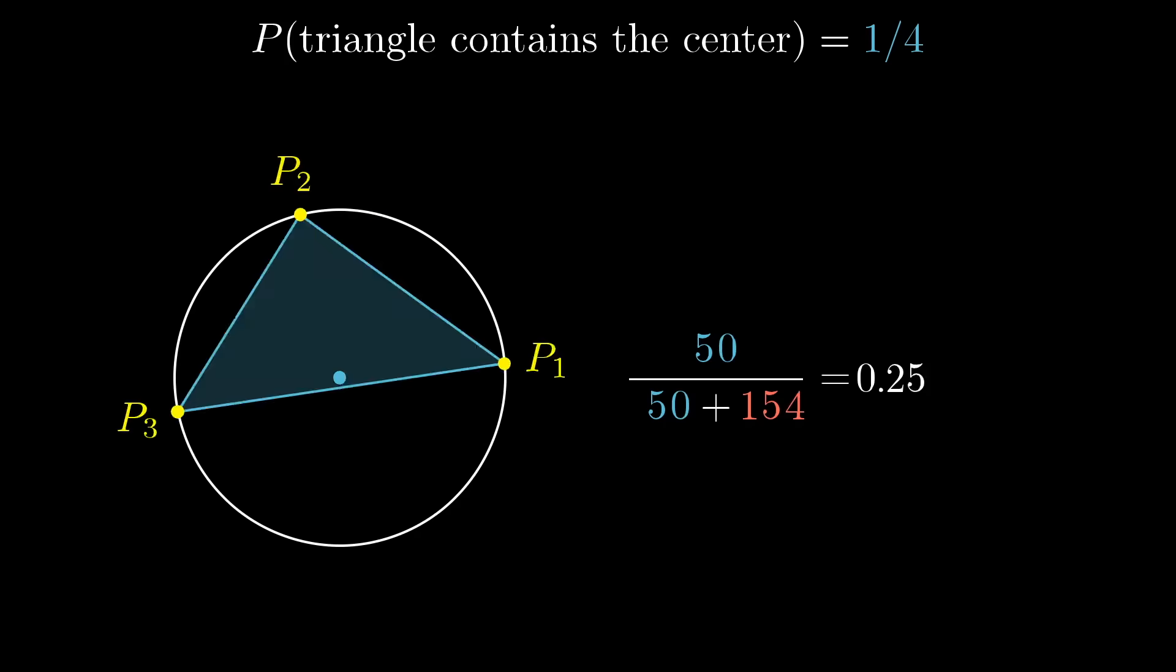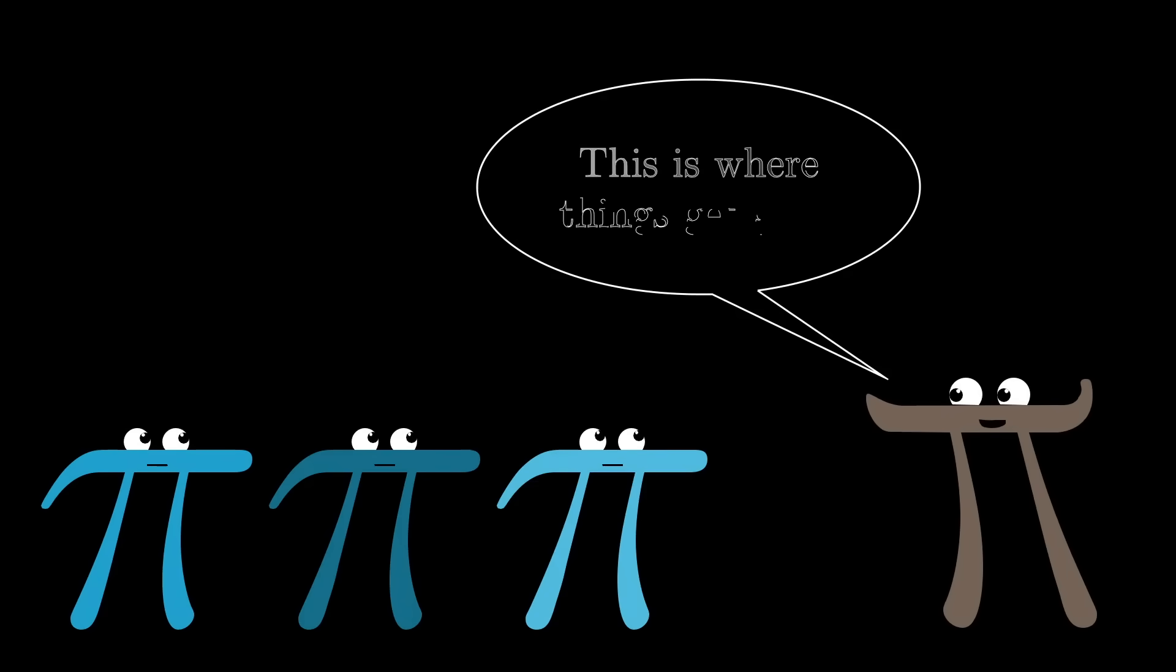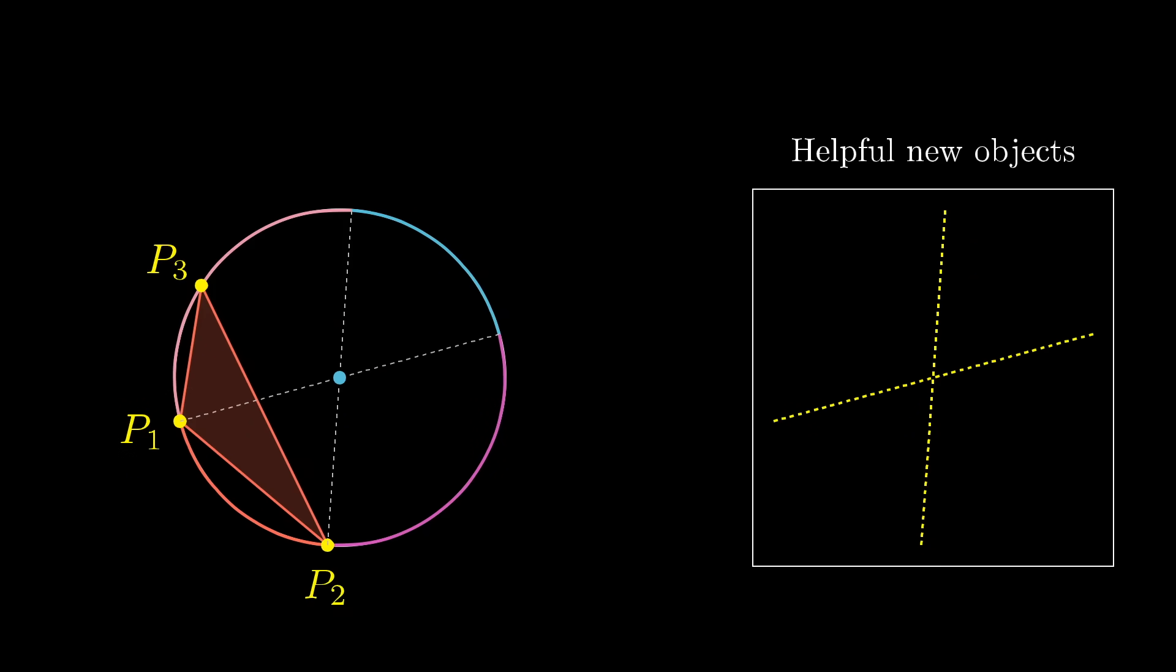One of the main reasons I wanted to make a video about this particular problem is that what's about to happen carries with it a broader lesson for mathematical problem solving. Think about those two lines that we drew for p1 and p2 through the origin. They made the problem a lot easier to think about. And in general, whenever you've added something to the problem setup that makes it conceptually easier, see if you can reframe the entire question in terms of those things that you just added.